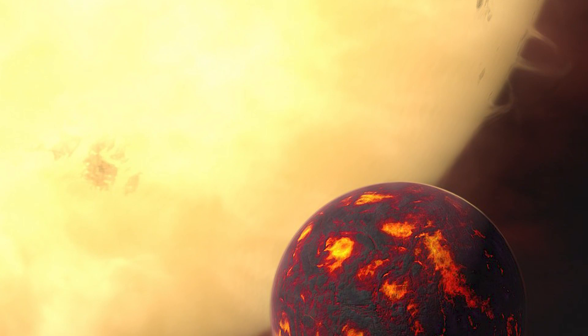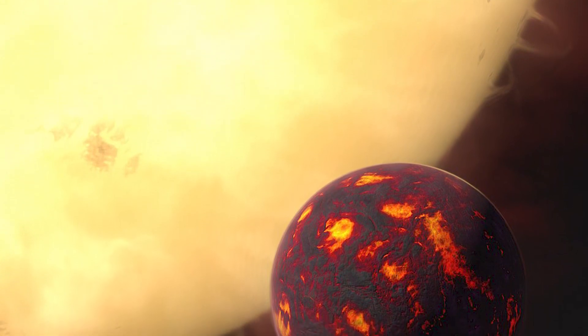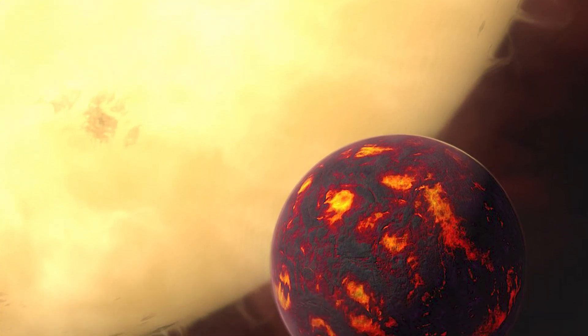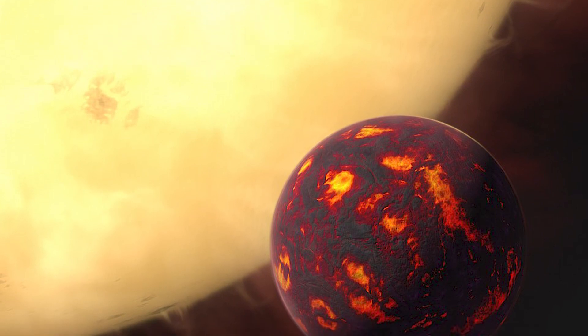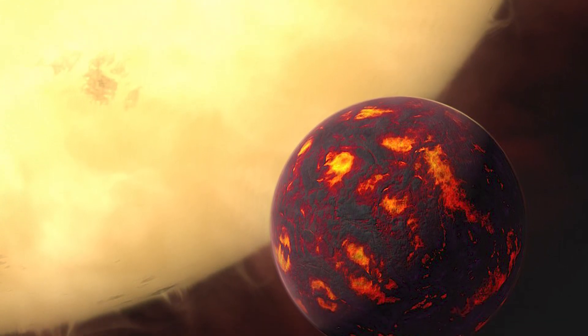In 2004, astronomers discovered 55 Cancri e, a hellish super-Earth twice the size of our home. The fact that it orbited closer than Mercury does in our solar system confused astronomers and got them asking some important questions.